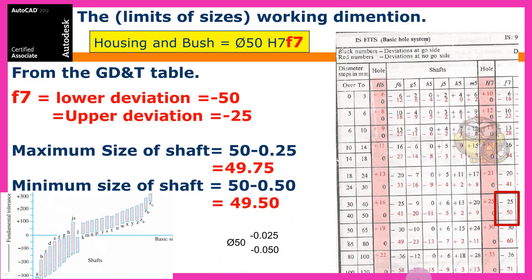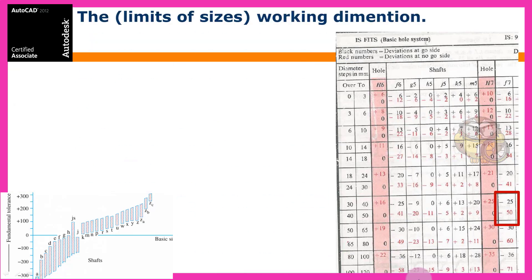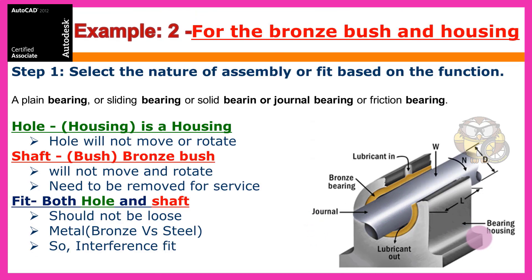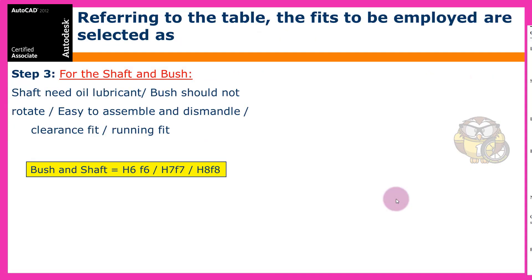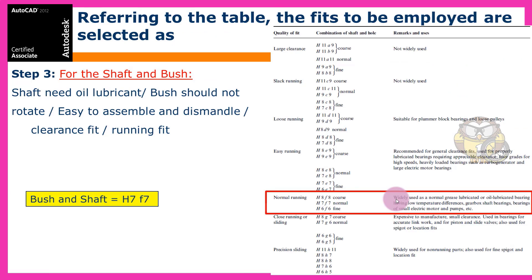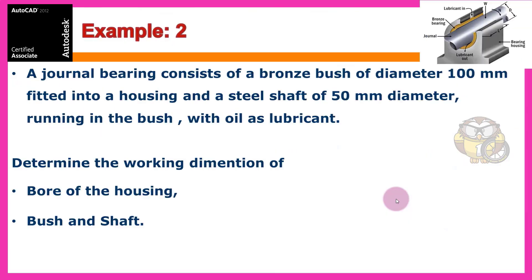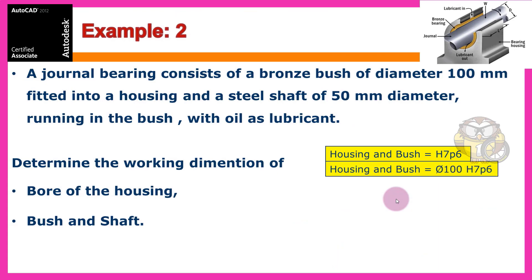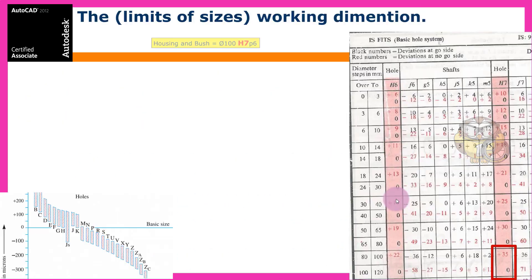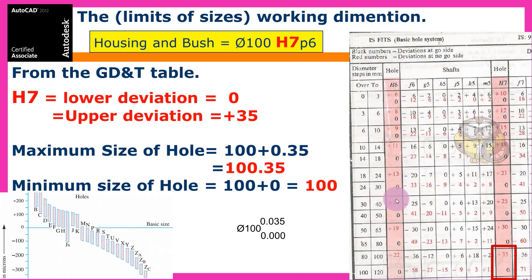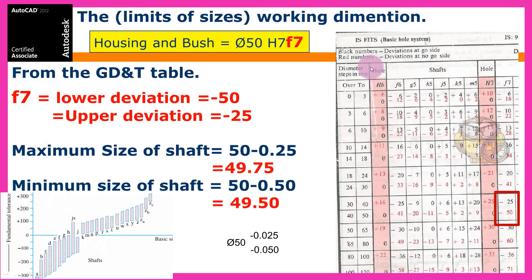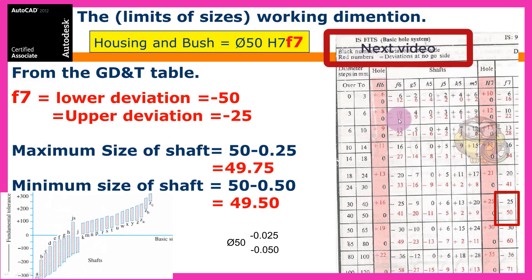This method is used in industry. The hole and shaft combination is determined through engineering knowledge and experience — brainstorming the fitting requirements, then deciding and choosing the appropriate fit. In industry, the go and no-go gauge sides are used to verify the black and red deviation limits.